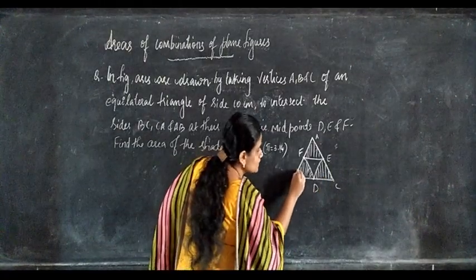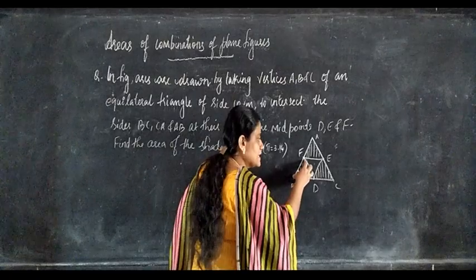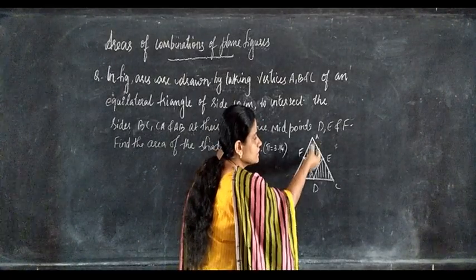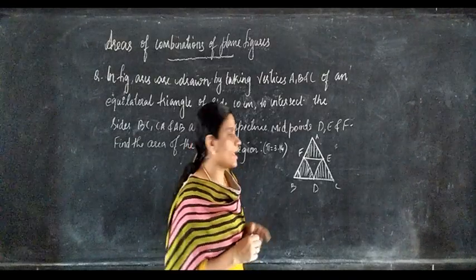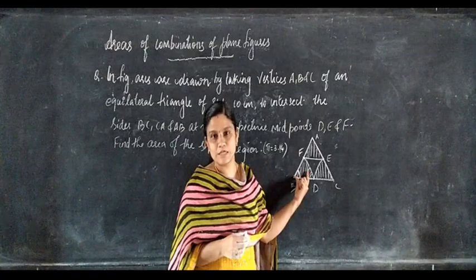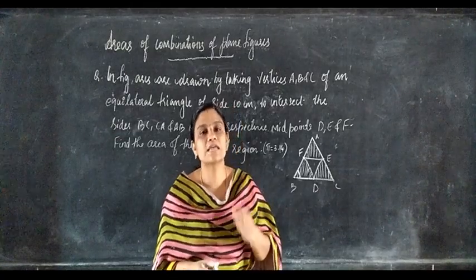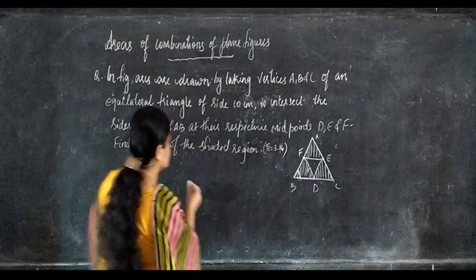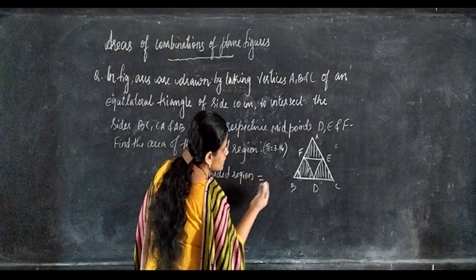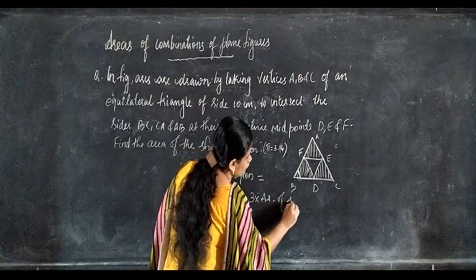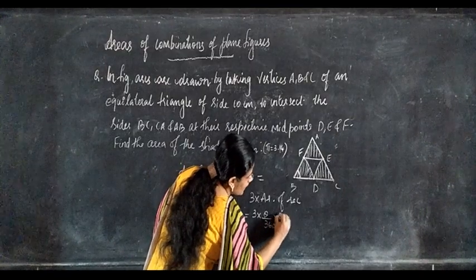The shaded regions are sectors. Theta equals 60 degrees and radius equals 5 centimeters. There are three equal sectors. Area of shaded region equals 3 into area of one sector, that is 3 into theta by 360 into π r square.